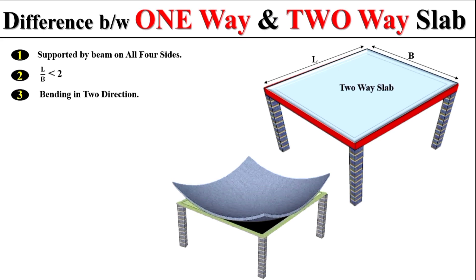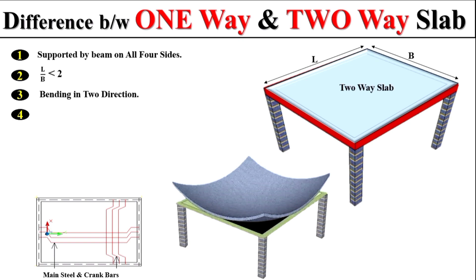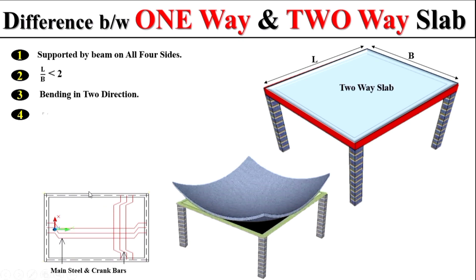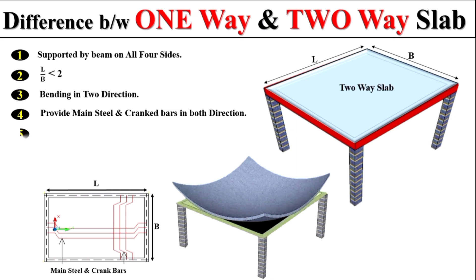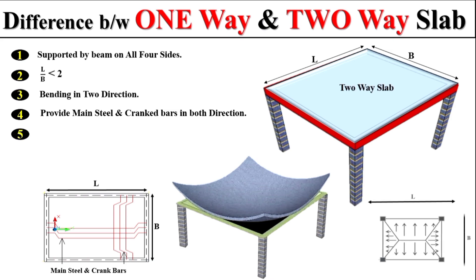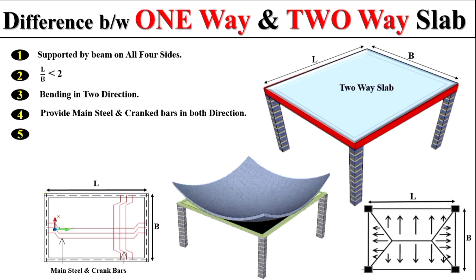Unlike a one-way slab where bending is in one direction, in a two-way slab we normally design the slab main reinforcement in both directions. As you can see here, the slab main reinforcement is properly arranged in both directions. Also, in a two-way slab, the slab load will be transferred in two directions.